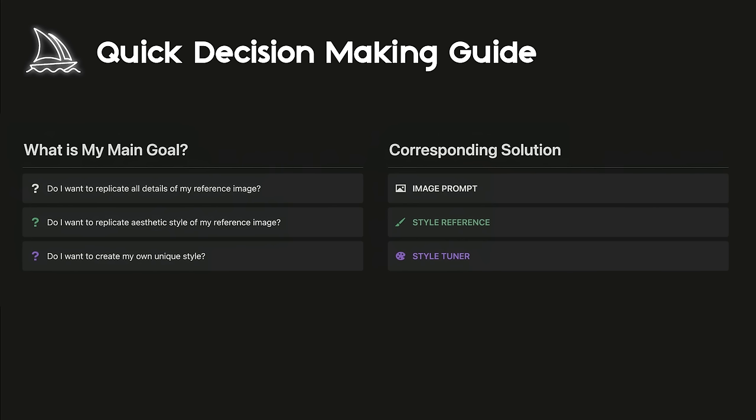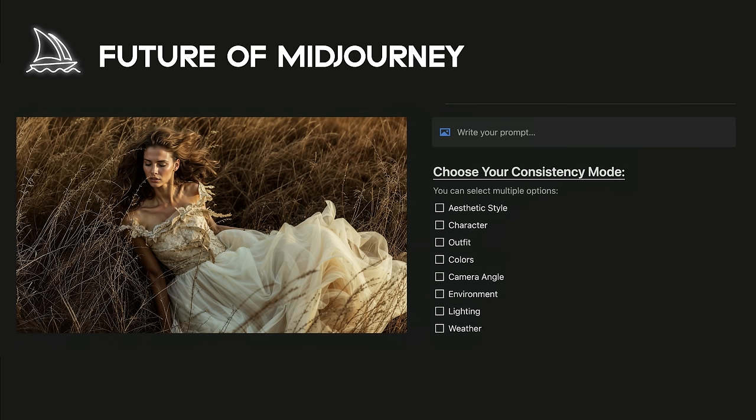Style tuner is typically used to explore aesthetic options for a given text prompt and fine-tune a unique visual aesthetic style. With all these changes coming to the platform, things are getting complicated. In the last office hours, they mentioned they're working on a new feature where users can choose exactly what they want to copy from an image and keep it consistent throughout new generations. I believe this flexibility and multidimensionality will provide tremendous opportunities for storytellers in the upcoming weeks.